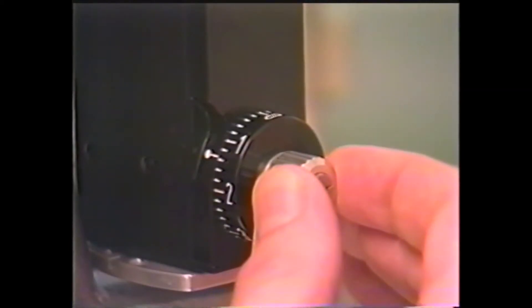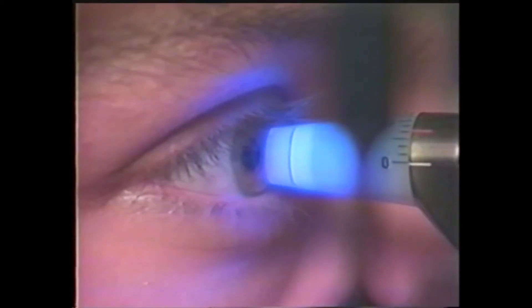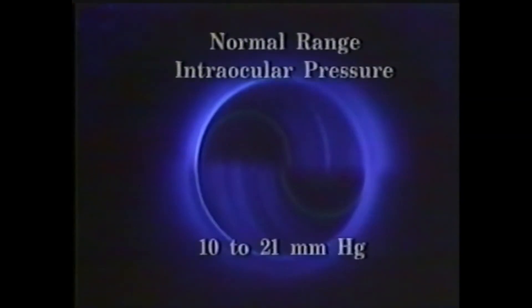The position of the measuring drum at the side of the tonometer knob records the units of force needed to flatten a known area of the cornea. These units are directly converted to millimeters of mercury. The normal range of intraocular pressure is 10 to 21 millimeters of mercury.